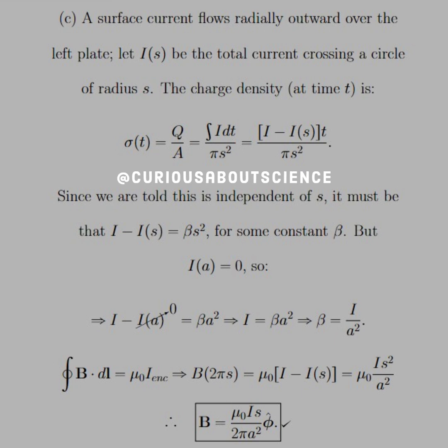Now C, we got to do a little more work. We see that a surface current flows radially outward over the left plate. So we'll go ahead and let I(s) be the total current crossing a circle of radius s. Okay, the charge density at time t is, well, if we look at the charge, Q(t) is equal to Q over A, which we already saw Q is the integral of Idt, A is just πs². But we see here that I is not exactly constant. What we have is that for the charge on the plate, whatever we have is the total current minus the charge on the cylinder of reference, so that we're looking at what's outside of the cylinder. Okay, so that's why we have I minus I(s). And that's the only reason why that's there like that. It took me a little while to maneuver it in my head, but nonetheless, it's pretty straightforward there. But what this is saying is that since we're told that this is independent of s, it must be that this difference I minus I(s) is equal to some factor β times s² for the area's sake.